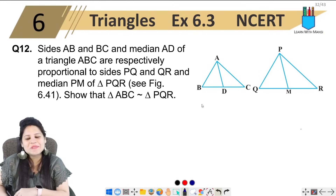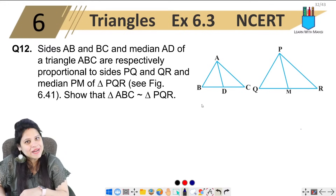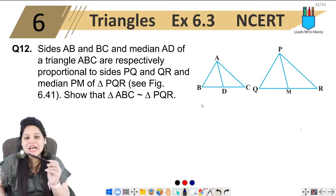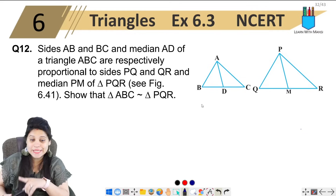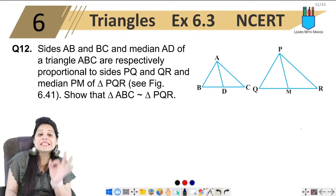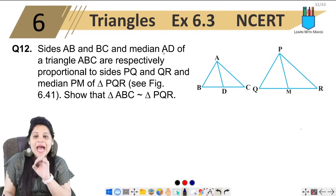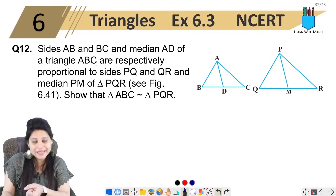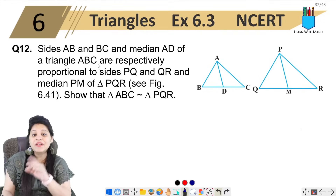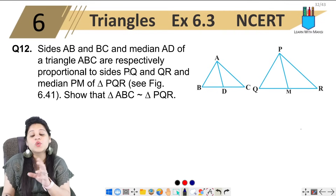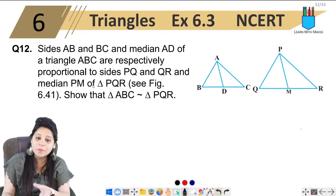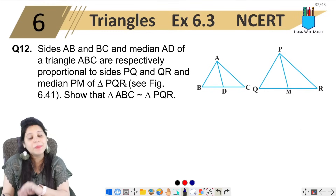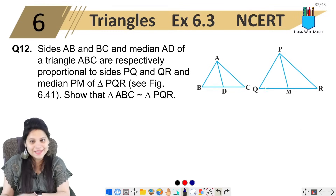Hello my lovely students, this is Mansi. Welcome back to the channel. Now we are on the 12th question of exercise 6.3. The question says: sides AB and BC and median AD of a triangle ABC are respectively proportional to side PQ and QR and median PM of triangle PQR. These are the two triangles.